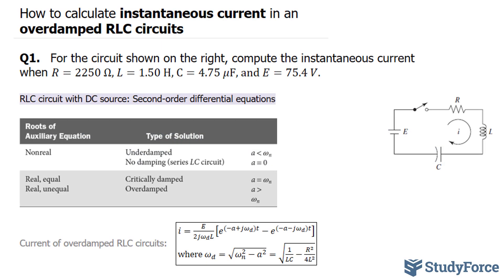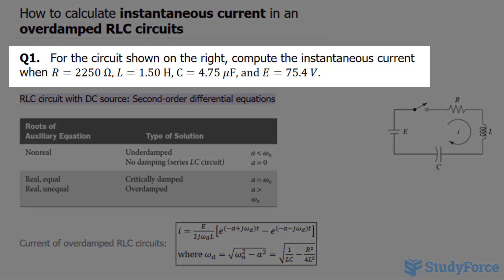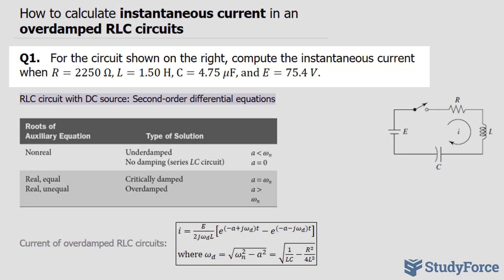In this lesson, I'll show you how to calculate the instantaneous current in an overdamped RLC circuit. The question reads, for the circuit shown on the right, compute the instantaneous current when R equals 2250 ohms, L equals 1.5 henrys, the capacitance is 4.75 microfarad, and our voltage source E equals 75.4.